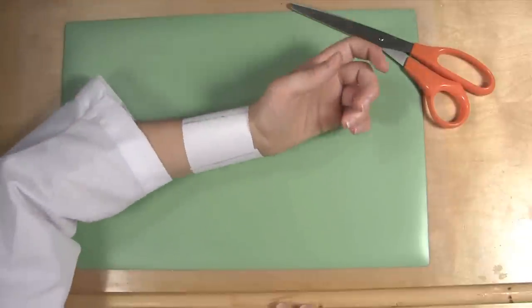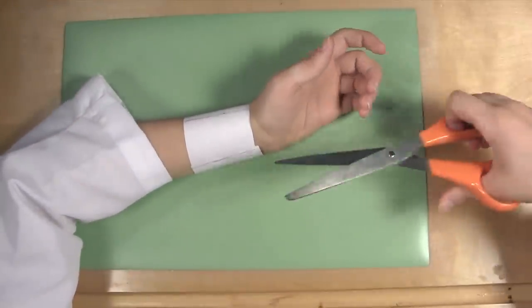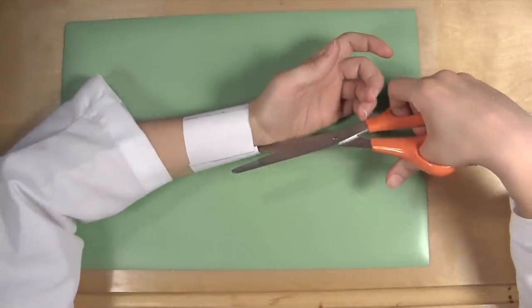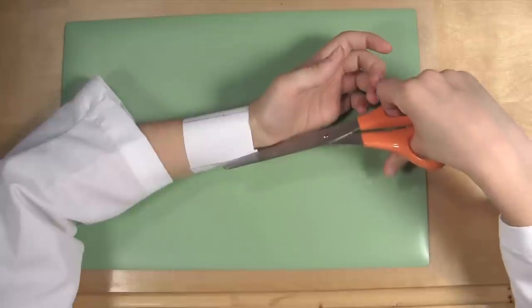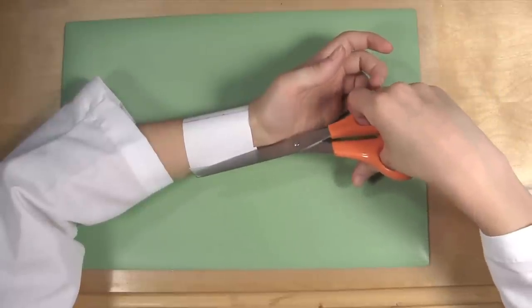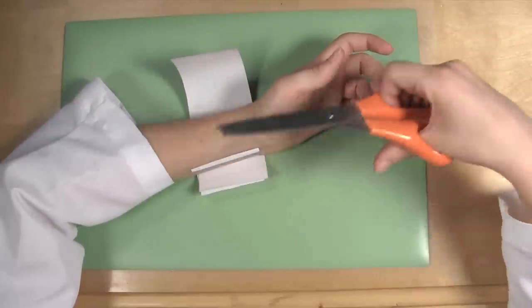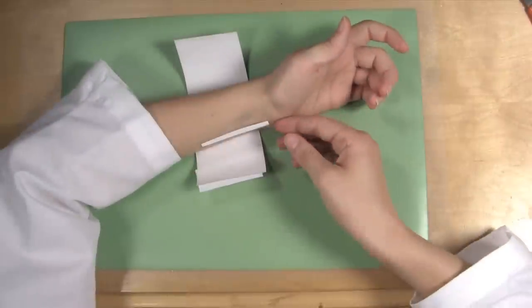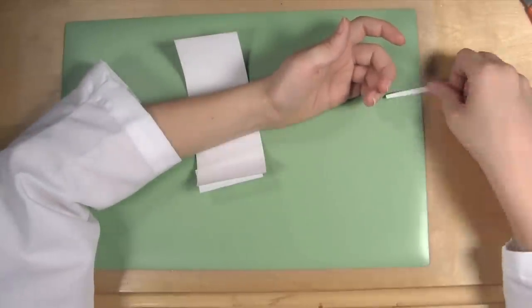Then take your scissors and cut along the line you just drew on the paper watch band. Be sure to cut through both ends of the paper on your wrist. Remove the paper watch from your wrist and get rid of the scraps.